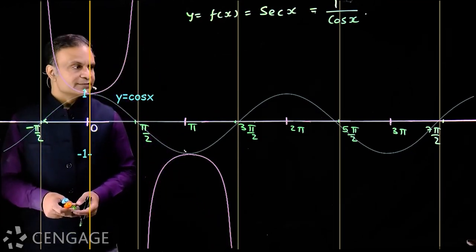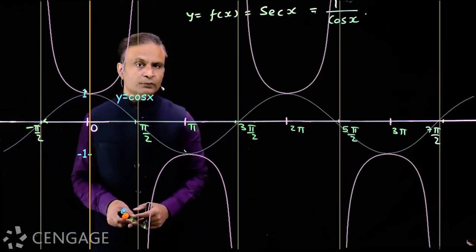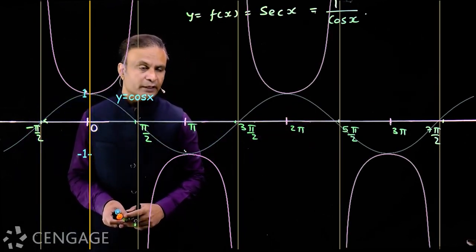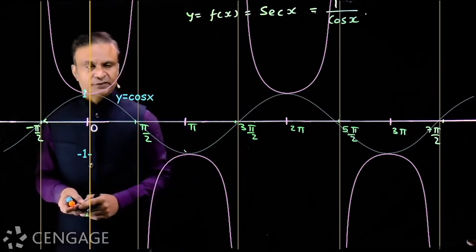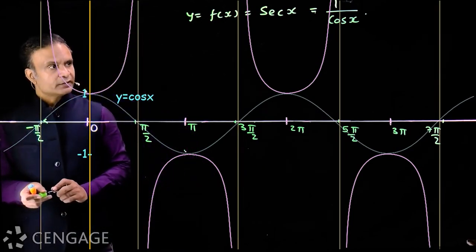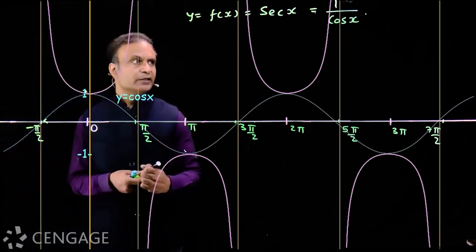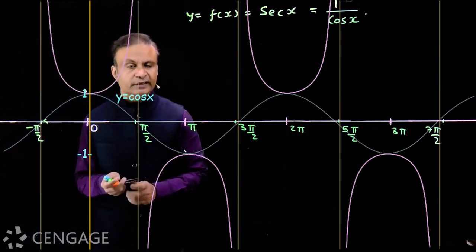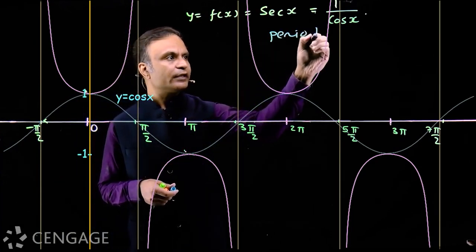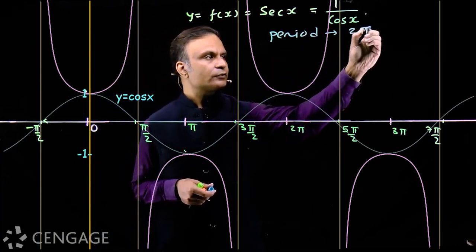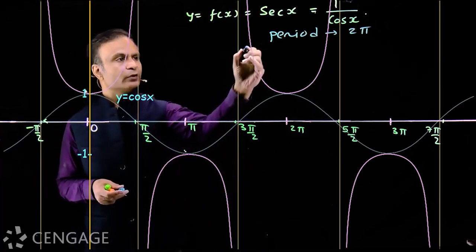Similarly, we can draw the graph of sec(x) in the interval 3π/2 to 7π/2 for the next complete cycle. The period of sec(x) is 2π.